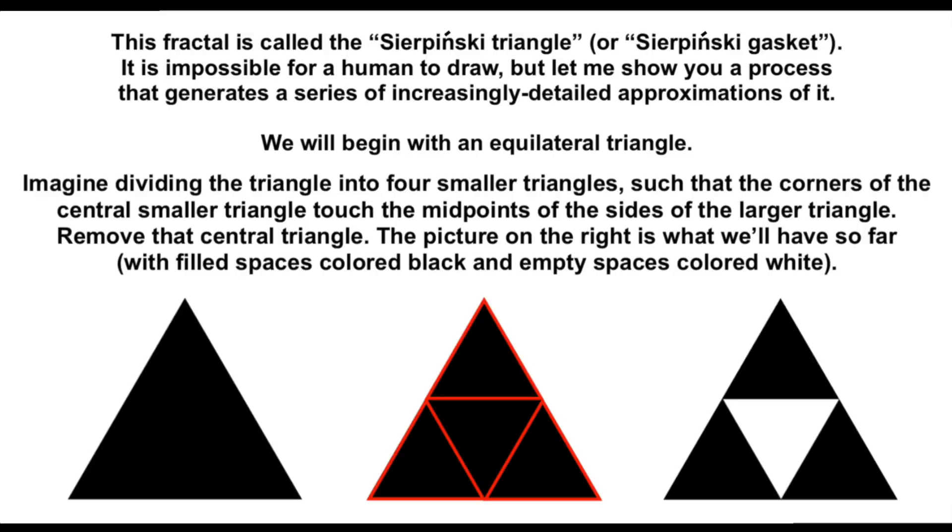Here's what we're going to do. We start with an equilateral triangle and imagine it being subdivided into four smaller equilateral triangles, each of which have a side length half as big as the original. We remove the middle of those triangles, leaving just three smaller equilateral triangles left.